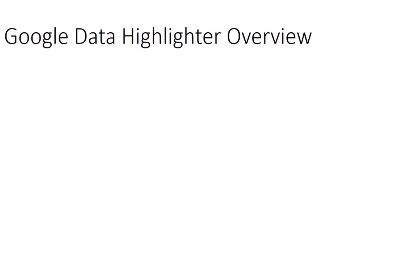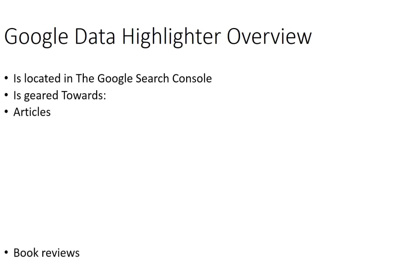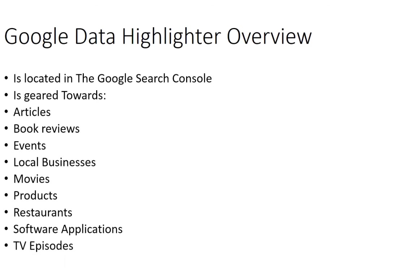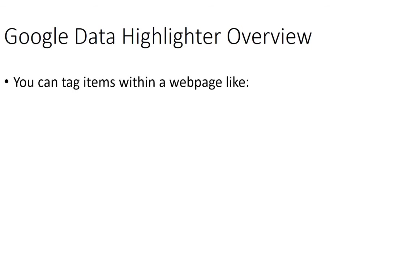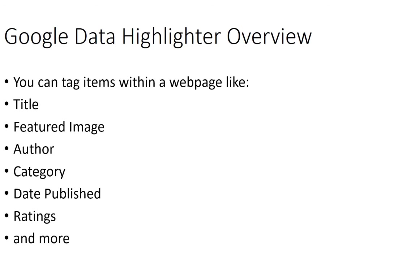The Google Data Highlighter is located in the Google Search Console and it's geared toward articles, book reviews, events, local businesses, movies, products, restaurants, software applications, and TV episodes. You can tag items within web pages like the title, featured image, author, category, date published, ratings, and much more.